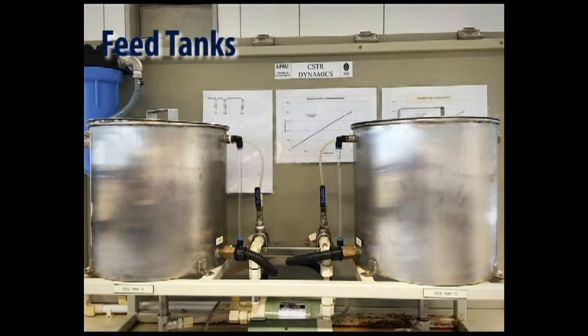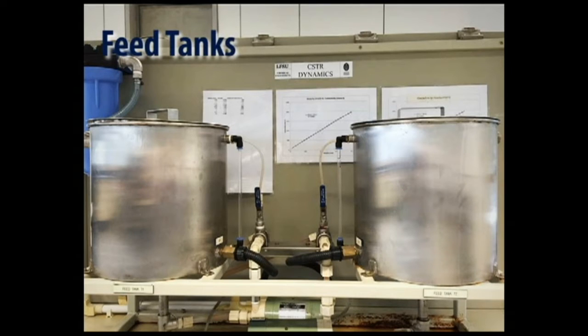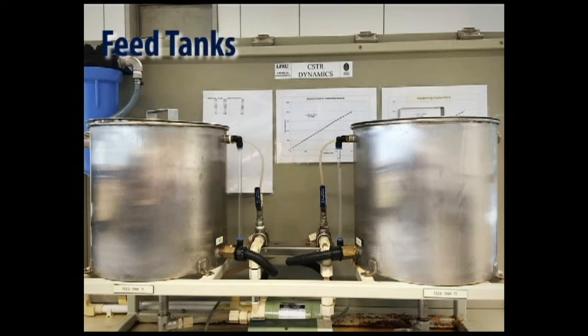The feed tanks consist of feed tank 1 and feed tank 2 with a capacity of 15 liters each. Feed tank 1 is filled with deionized water from the water deionizer, whereas feed tank 2 is filled with sodium chloride solution which is prepared beforehand. Each tank has a feed pump to transfer the liquid from the feed tank to the reactor. Also, there is a level switch fitted in each tank to protect the pumps from dry run.